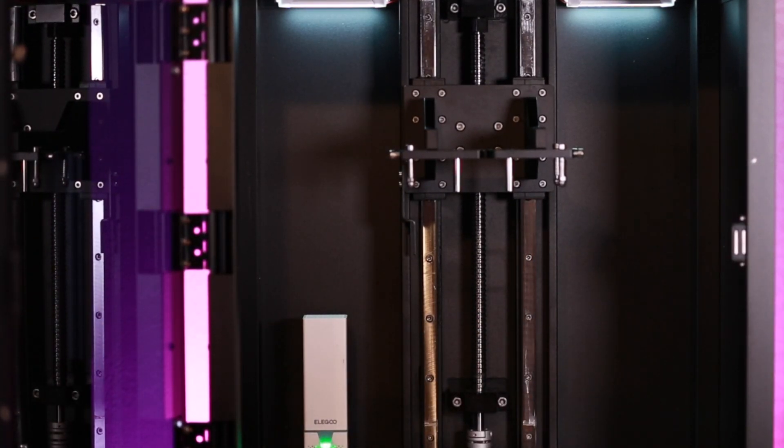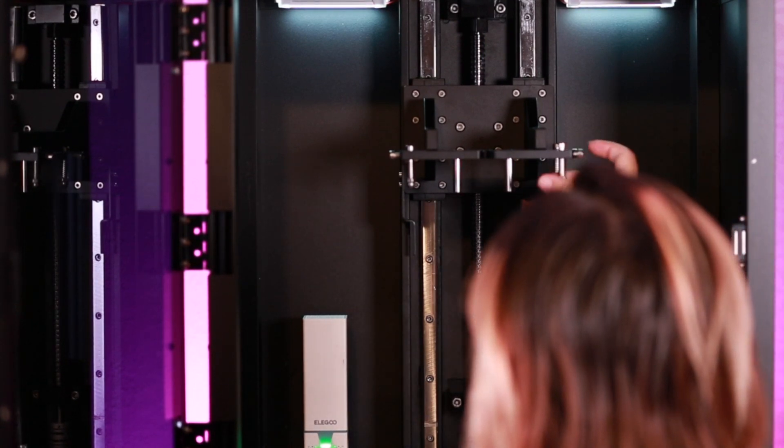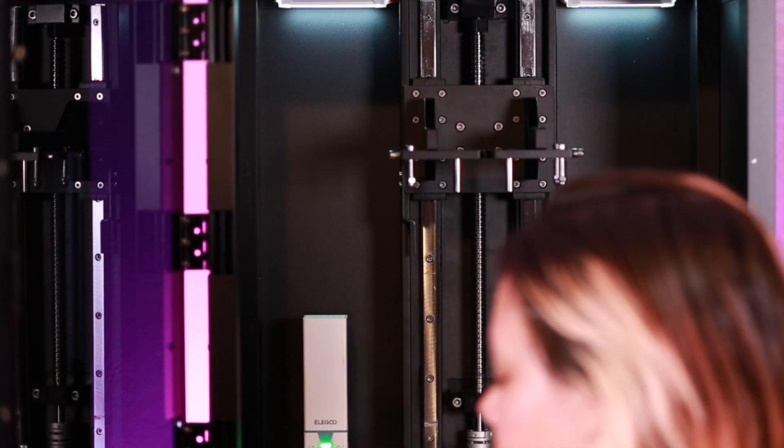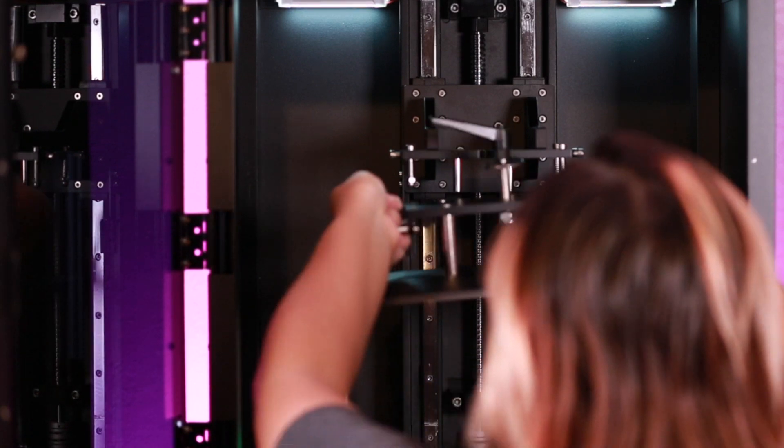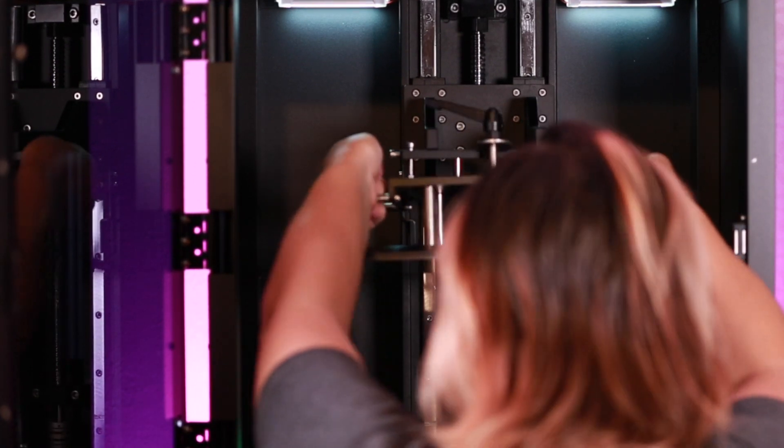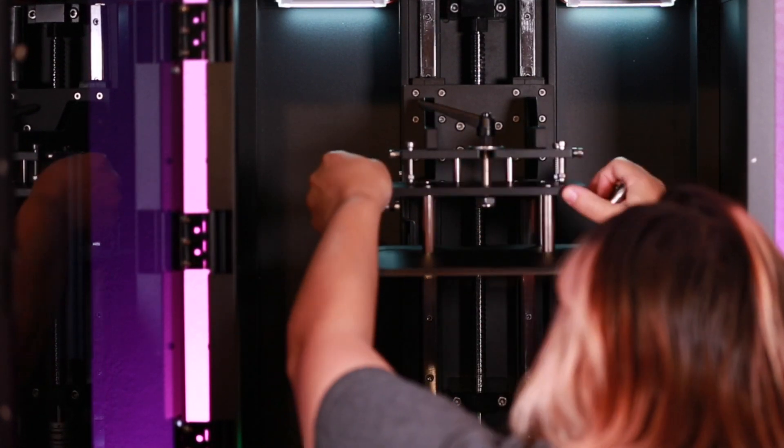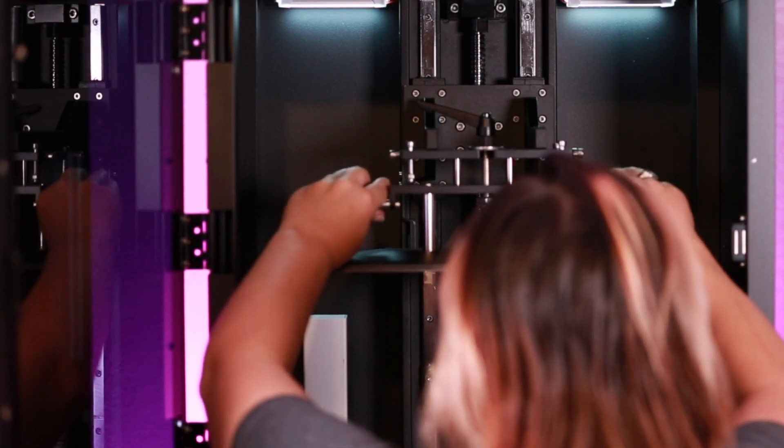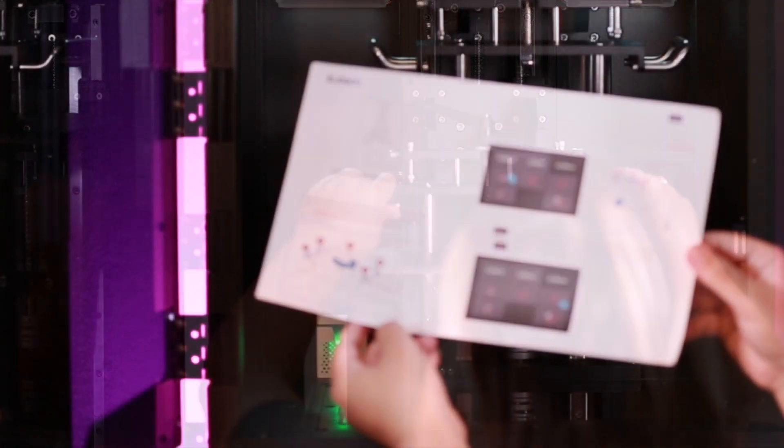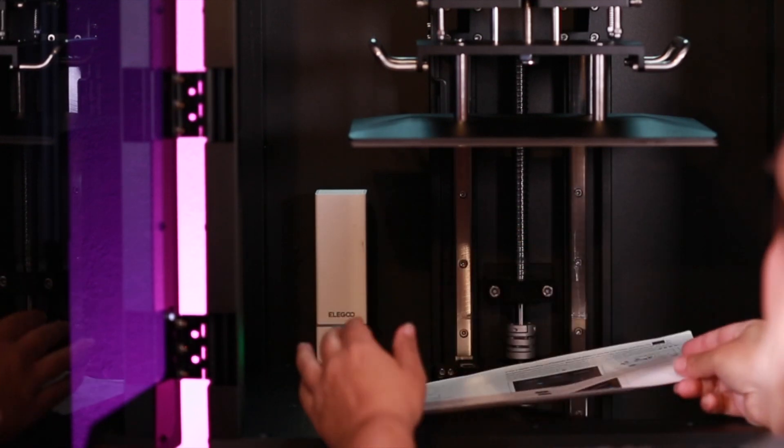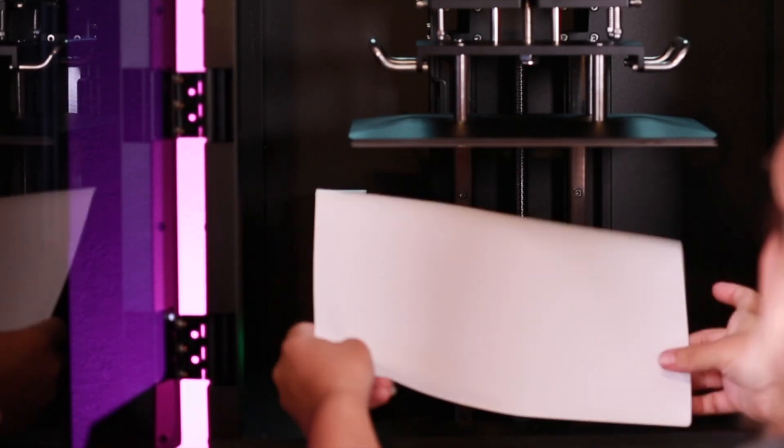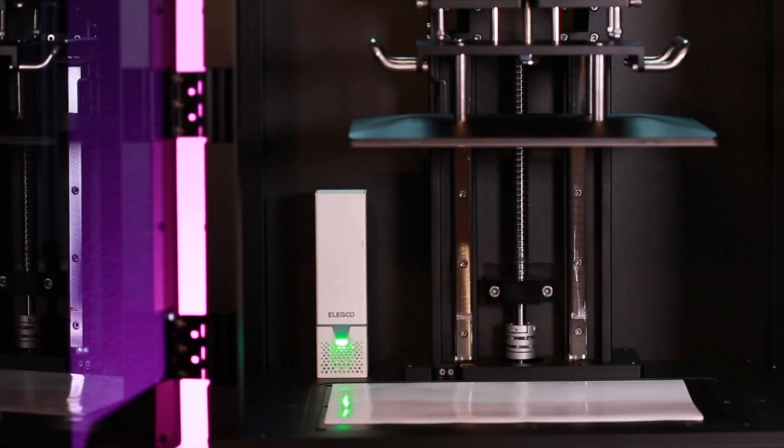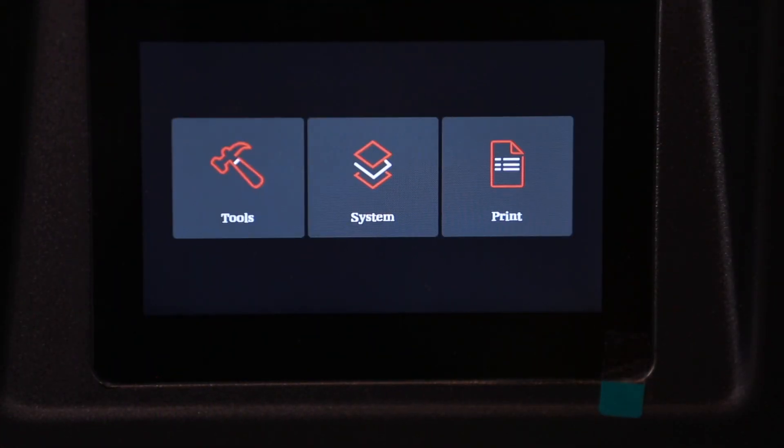So before starting, unscrew and remove the vat and make sure all your top screws are loose so that way the build plate has room to kind of move around to make the adjustment for the height on its own. Now I'm just using the leveling paper that Elegoo provided and I'm just setting it down on the screen before I start. And we're just going to turn on the printer and go ahead and do the leveling process.